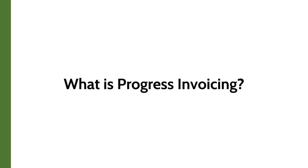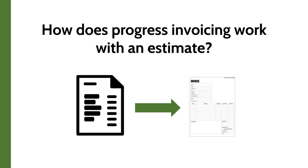If you watched my creating estimates in QuickBooks Online video, you will remember that I mentioned that estimates are non-posting transactions that do not impact your sales account. To convert an estimate to a sales transaction, you need to first verify that the status of the estimate is showing as expected, then add the estimate to an invoice when it's time to bill the customer. This process is called progress invoicing in QuickBooks Online.